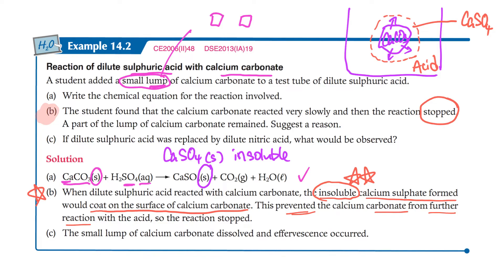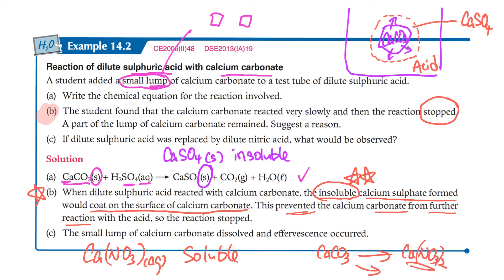Part C: if dilute sulfuric acid is replaced by nitric acid, the observation would be different, because the calcium nitrate formed is soluble. So the calcium carbonate can keep reacting to give calcium nitrate without having that insoluble layer wrapped around it. The reaction continues and effervescence occurs throughout. You will learn more about which salts are soluble or insoluble in chapter 18.